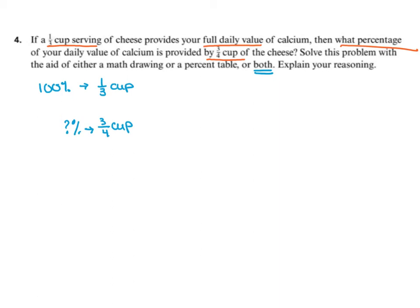So we're starting with that we know 100% or a full serving is 1 third of a cup. We would like to find what percent of the full daily value is in 3 quarters of a cup. Since we know 3 quarters of a cup is more than 1 third of a cup, this tells us our answer is going to be greater than 100%. So one helpful thing might be to consider looking at what they would be if they had common size parts.